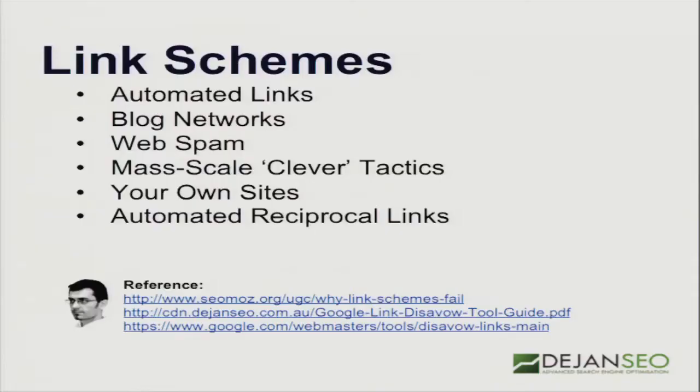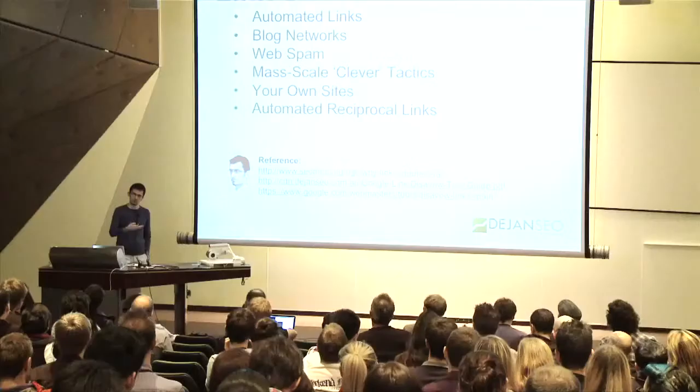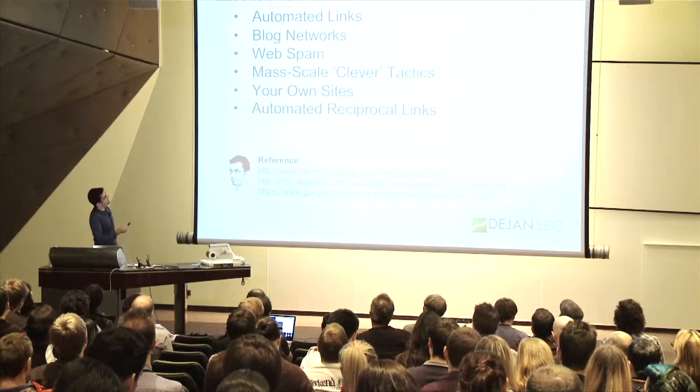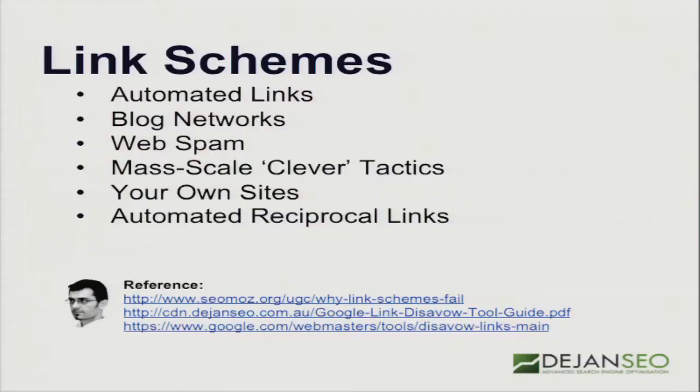Inbound links can harm you. People always thought only linking out to others was a problem, but Google can penalize websites for receiving bad inbound links. Blog networks: if you buy 2,000 links from different websites, you can now get in trouble. Penguin has been designed to catch people cheating on a mass scale. Typical web spam, clever tactics like creating widgets or WordPress plugins, using clients to heavily link your anchor text, building a whole network of your own websites, and automated reciprocal links — Google can and will catch all these attempts at manipulation.